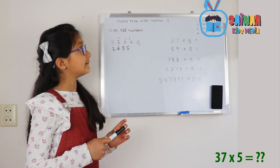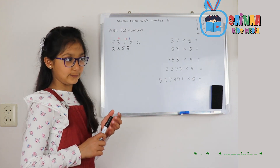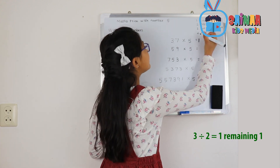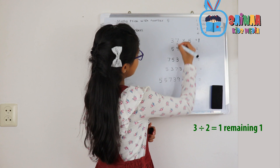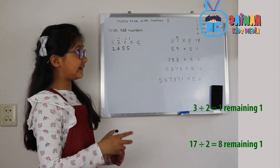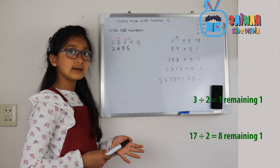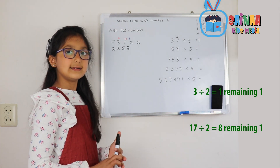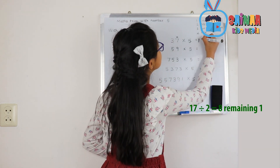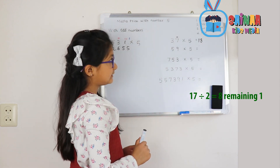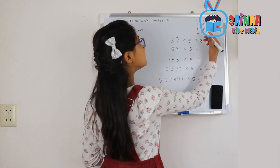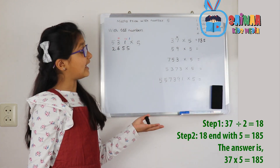Let's do 37 times 5. 3 divided by 2 is 1, remaining 1. So we write 1 here, and this 1 turns into a 10. 10 plus 7 is 17. 17 divided by 2 is 8, and we still have 1 over. That 1 turns into 5. Bingo — here's our answer!